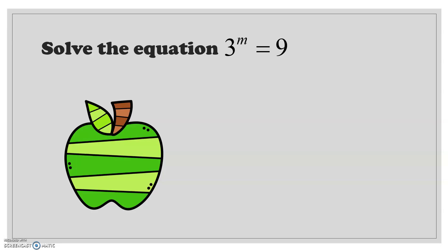Let's get into a few questions, starting super simple. Solve the equation: 3 to the power of m is equal to 9. I want to know what m is equal to. The first thing I'm going to do is rewrite 9 as 3 squared, since 3 squared and 9 are the same thing. So 3 to the power of m is equal to 3 squared. Notice the bases are the same, so I can set the powers equal to one another — m is equal to 2. This was very simple and didn't require an extra solving step.